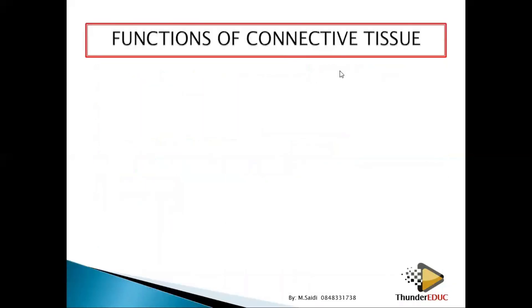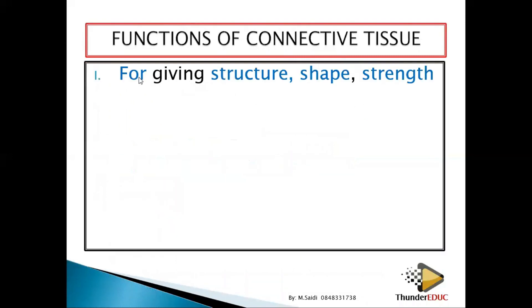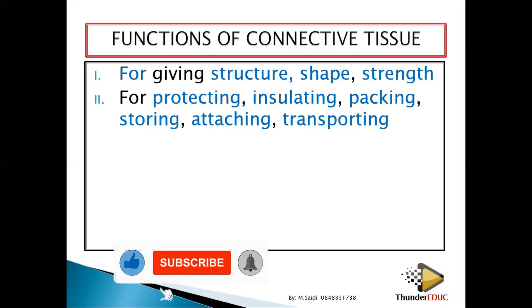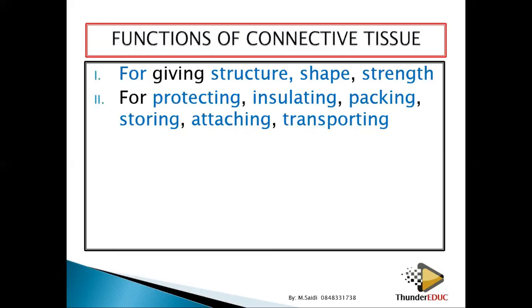What are some of the functions of connective tissue? Number one: giving structure, shape, and strength. Number two: protecting and insulating. For example, adipose tissue around organs like the kidney and heart provides protection. During winter, people with more body fat lose less heat because the fat insulates the body.